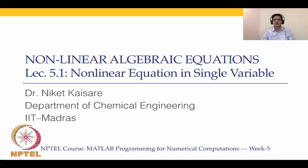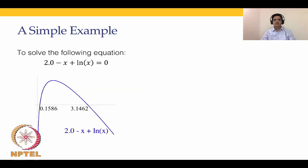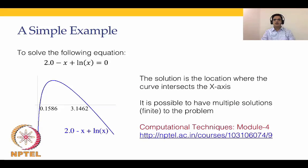The simple example we are going to talk about today is solving the equation 2 minus x plus ln(x) equal to zero. If we plot this function on the positive x-axis, the blue line represents 2 - x + ln(x). Graphically, the solution is where the curve intersects the x-axis. It is also possible to have multiple solutions, as seen here.